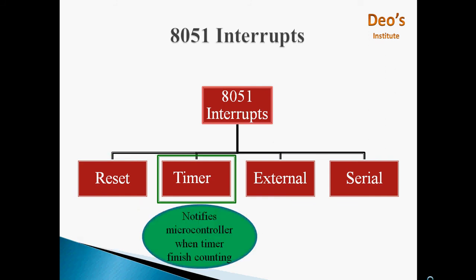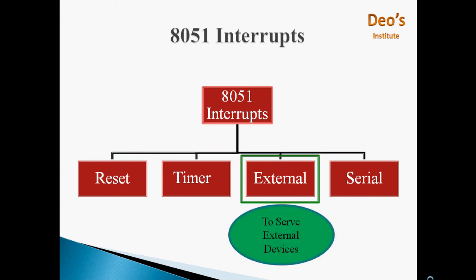Next is timer interrupt. Each timer is associated with a timer interrupt. A timer interrupt notifies the microcontroller that the corresponding timer has finished counting. Whenever timer finishes counting, it is notified by using the timer interrupt. There are two external interrupts, EX0 and EX1 to serve external devices. Both these interrupts are active low. An external interrupt notifies the microcontroller that an external device needs its service.